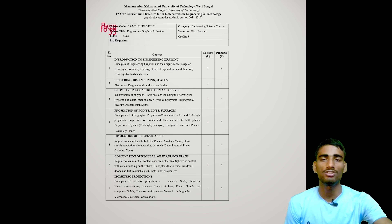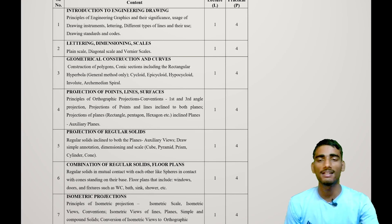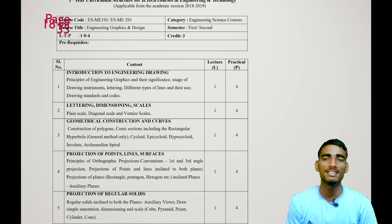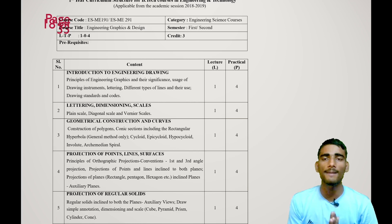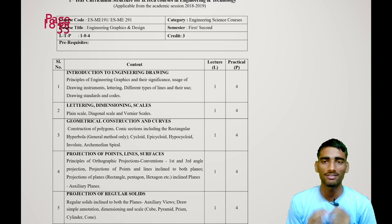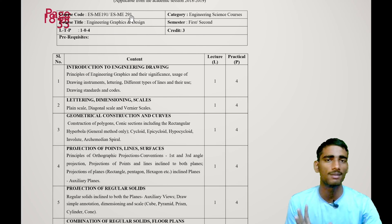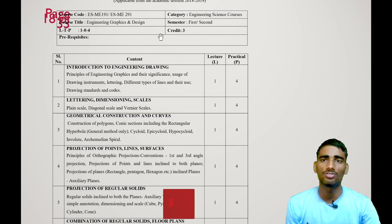Engineering Graphics and Design is a subject that is compulsory for all first-year students regardless of branch — CSC, IT, EC, EEE, Mechanical, or others. For CSC and IT students this is studied in the second semester, and for all other students it is in the first semester. The course code is ESME 191 for the first semester and ESME 291 for the second semester, but the syllabus is completely the same. It falls under the Engineering Science category.